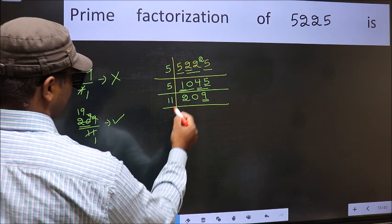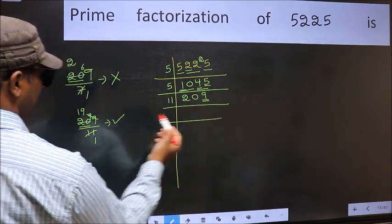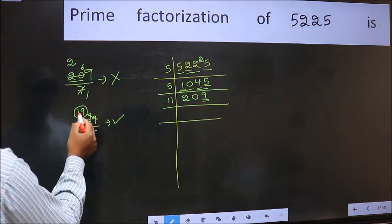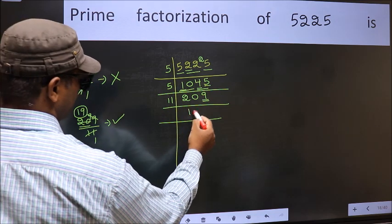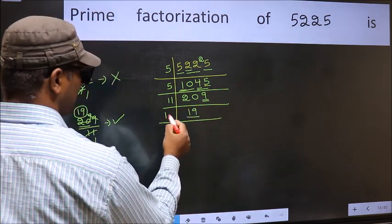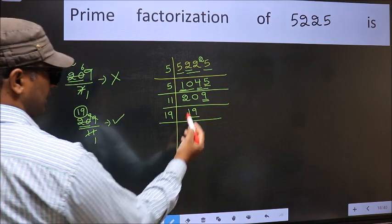So 11 here. And here we should write this number 19. Now we have 19. 19 is a prime number, so 19 once 19.